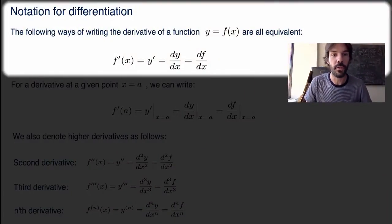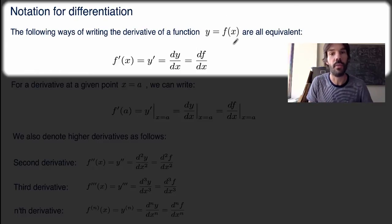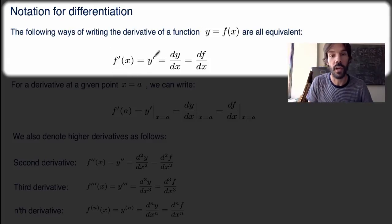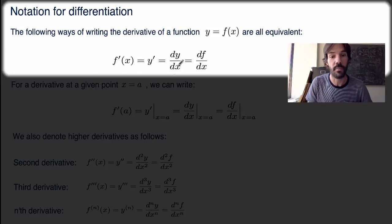Before we do that, let's clarify a little bit of notation. If you're given a function y equals f, there are a number of different ways to write its derivative. We've seen the notation f' and also y', but you could also use the Leibniz notation, dy over dx or df over dx. Now this is not really a quotient — it really just means the derivative of the function y or f with respect to the variable x.